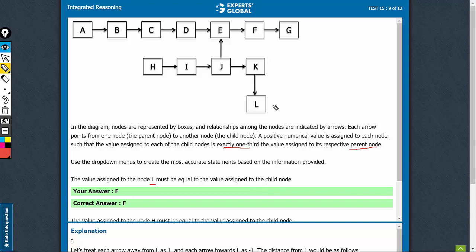Let's assume L is anything, let's say 1. If L is 1, this is a parent node, this must be 3. Another parent node, parent to 3, is 9.